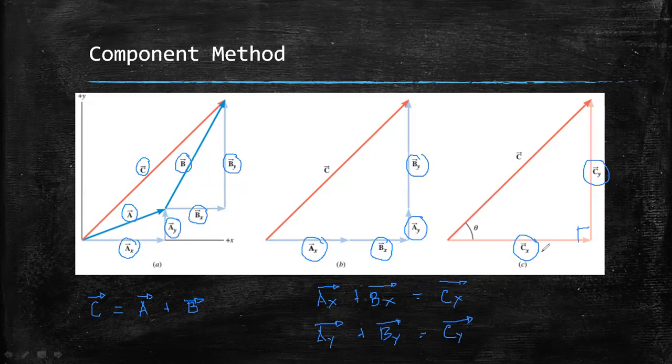So with this, we can solve now for vector C and its angle.